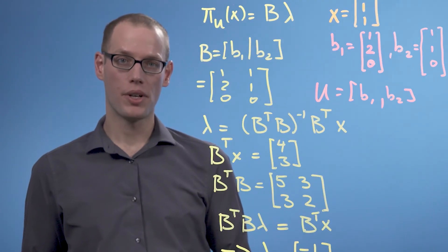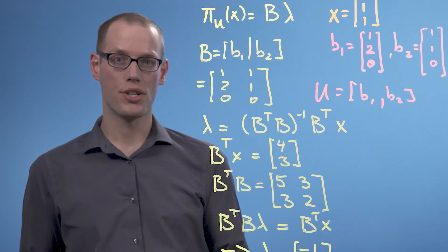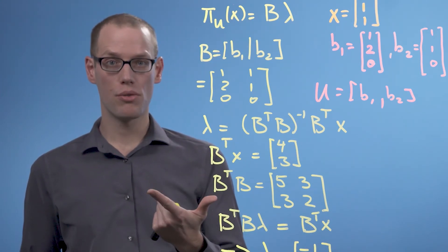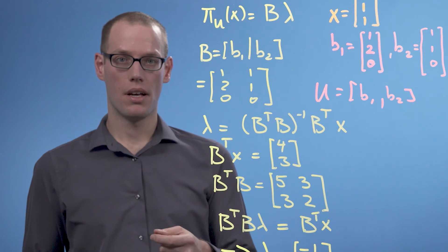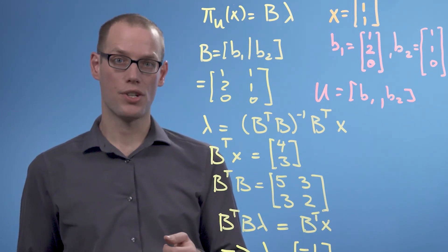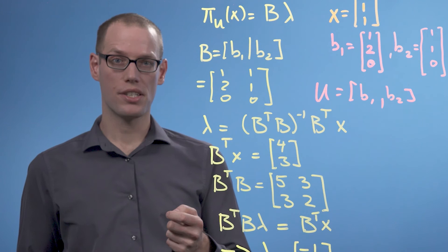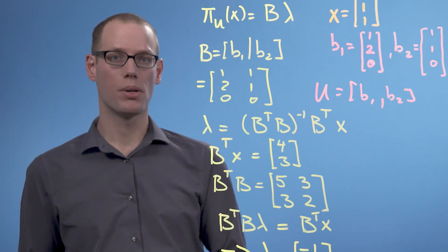Therefore, that is the compact representation of the projection of x onto this lower-dimensional subspace. In this video, we looked at a concrete example of the orthogonal projection of a three-dimensional vector onto a two-dimensional subspace. In the next video, we're going to exploit orthogonal projections and derive a dimensionality reduction algorithm called principal component analysis.